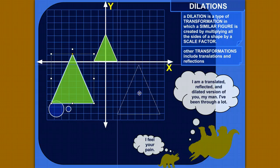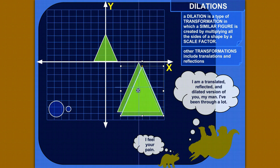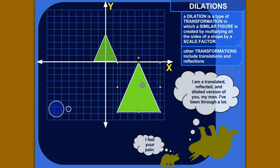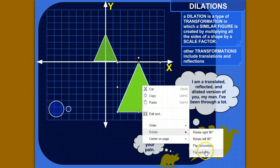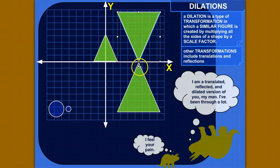And there's also reflections, and that's kind of just what it sounds like. I could reflect this object around the x-axis there, and I've reflected it across the x-axis, for example.